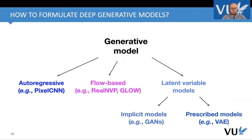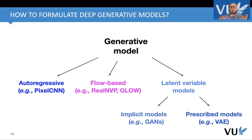If we've answered the question of where to apply generative models, we should answer how to formulate deep generative models. So far there are three groups of generative models: auto-regressive models, flow-based models, and latent variable models. Latent variable models can be defined in an implicit manner — meaning we don't specify the exact distribution but we are capable of generating new objects — or as so-called prescribed models, where we explicitly say this is a Gaussian distribution or a categorical distribution. In the implicit modeling approach, we just say we have a model and we are capable of generating new objects.